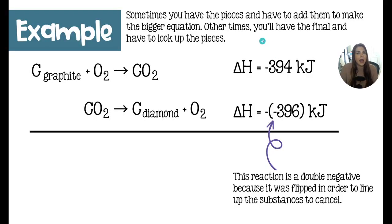So sometimes you will have the pieces that you need, and other times you'll have to go look them up. So let's say right here we are turning graphite into diamond. We have oxygen, carbon dioxide involved here. Let's read this out.